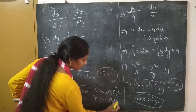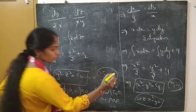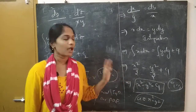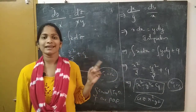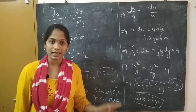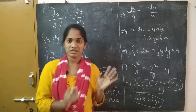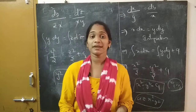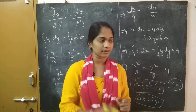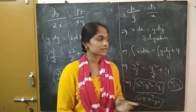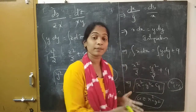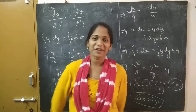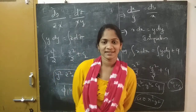Therefore the general solution is φ(u, v) = 0, that is φ(x² − y², y² − z²) = 0. This is the general solution of our given PDE. This was a simple example of how to solve using Lagrange's method Type 1. In the next video we will do more example problems to make it even clearer. Thank you for watching.